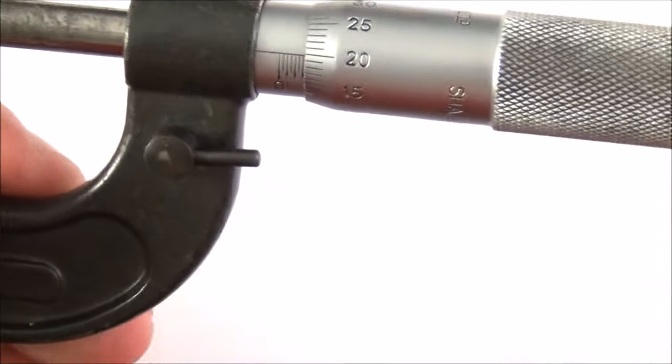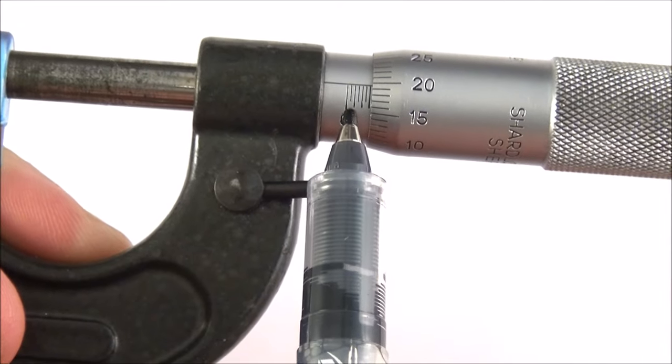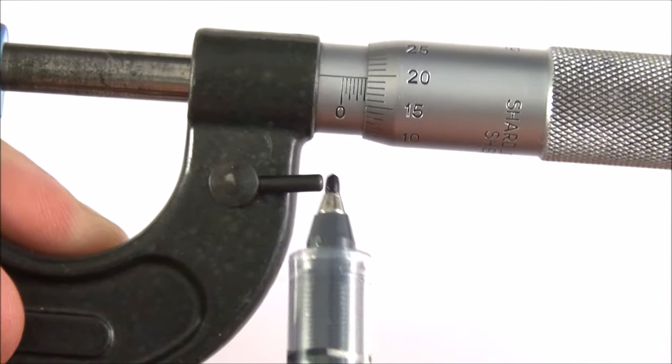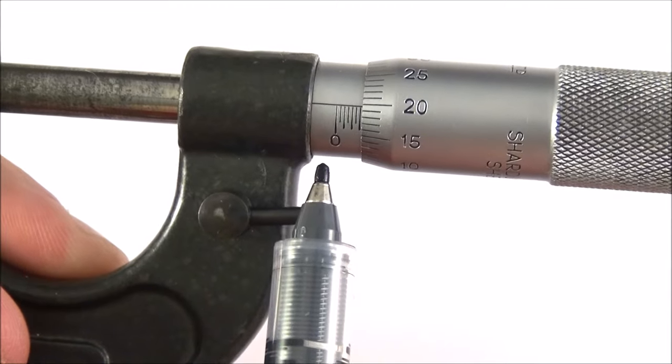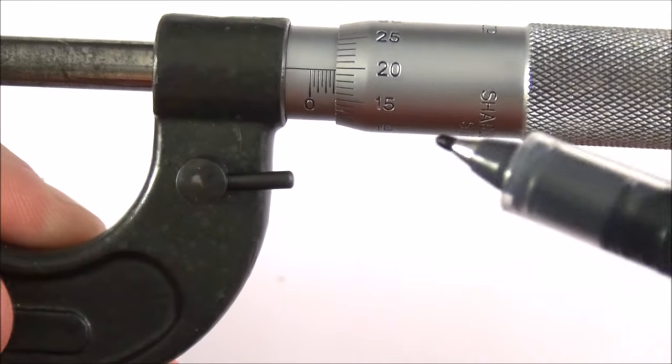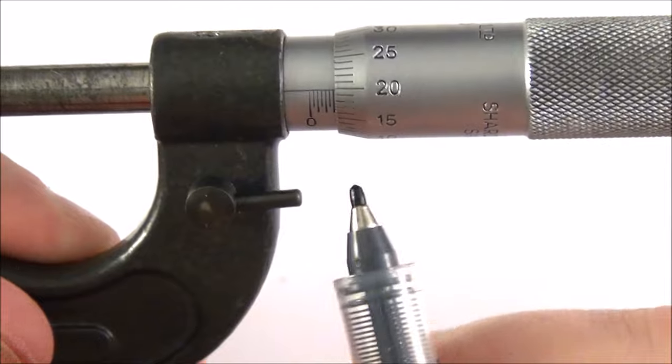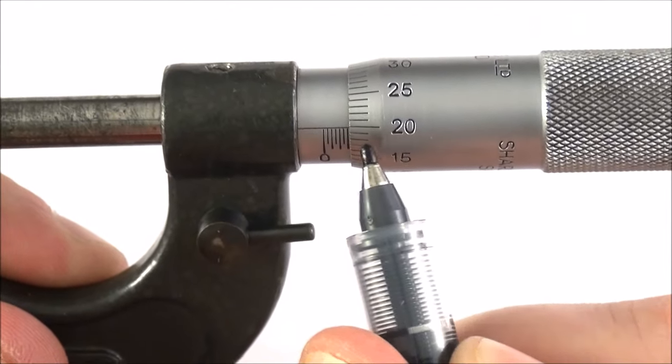The numbers down here go up in half millimeter divisions. At the moment if we count it along we've got one, two, three and a bit millimeters, and the bit is equal to 0.20 of a millimeter, effectively where this line lines up with the number over here.